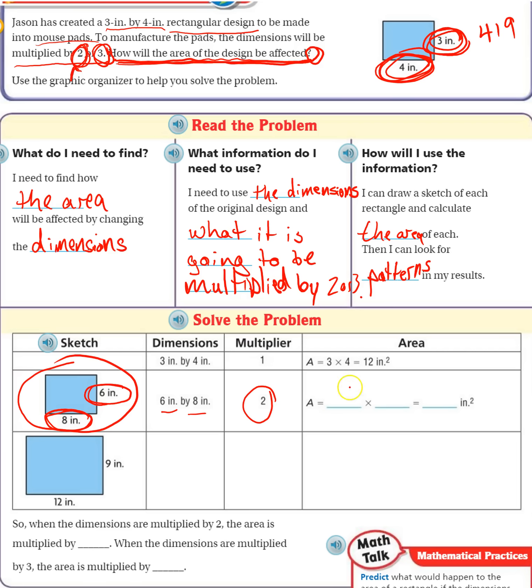So the area is now 6 by 8. And if we multiply 6 times 8, we get 48. Okay? So originally, the dimensions were 3 by 4, and the area was 12. And then we made it 2 times bigger. We made the dimensions 2 times bigger, and the area became 48.